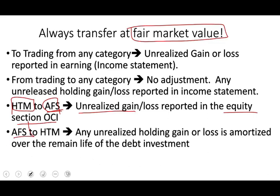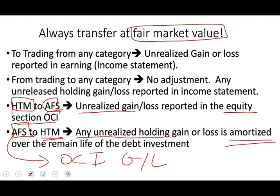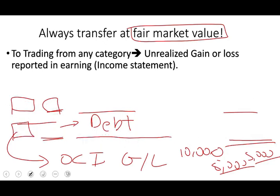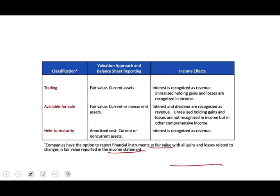What happens if we're going from available for sale to held to maturity? Available for sale was already at fair market value, and the gains and losses are sitting in OCI. Any unrealized holding gain or loss is amortized over the remaining life of the investment. For example, if we have a $10,000 gain or loss with two years to go, we amortize $5,000 each year. If we have 10 years to go, we amortize $1,000 a year. This applies only to debt securities, since only those qualify for held to maturity.